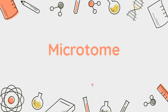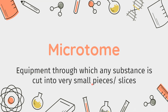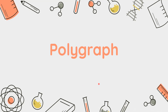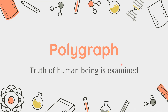Next is the Microtome. A Microtome is a device used to obtain very small pieces or thin sections of a particular organ or tissue. Next is the Polygraph. You must have observed it in detective shows — electrodes are added to detect whether a person is telling the truth or lying.